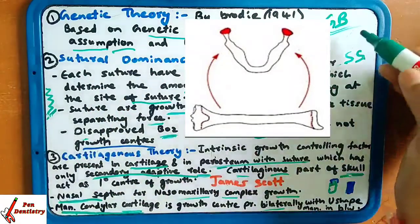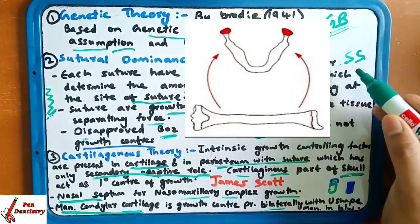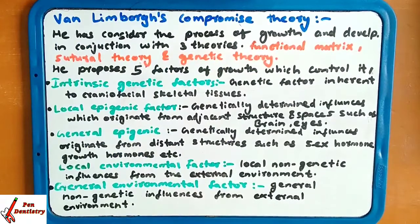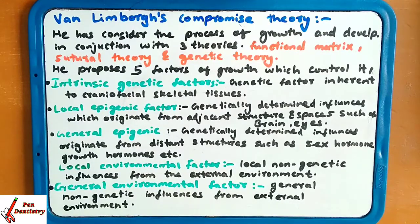To remember the mnemonics: genetic is GB — genetic, Brody; sutural is SS — Sischer; CJ is cartilaginous theory by James Scott. I have not explained the functional matrix theory in this video because it would make the video too long. I have given that theory in another video, which you can watch by clicking the I button.